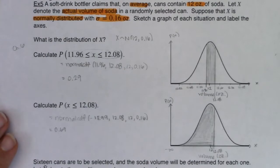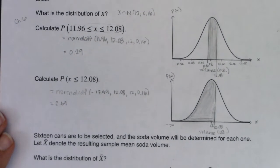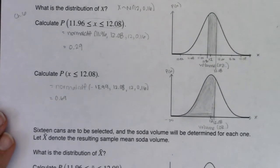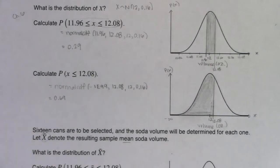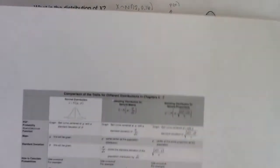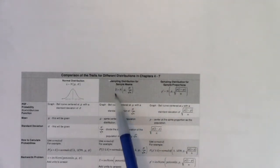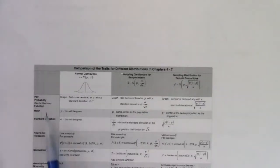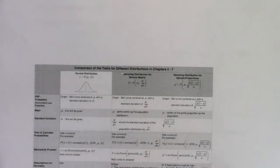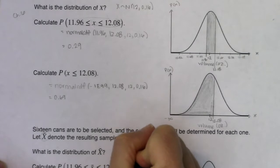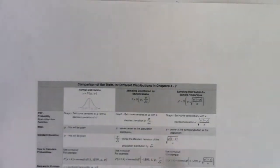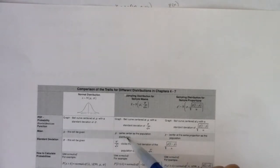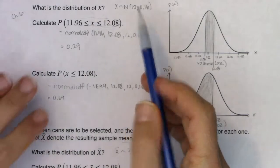Now let's bump up to chapter seven. It says 16 cans are to be selected and the soda volume will be determined for each one. Let x-bar denote the sample mean. So now I'm on an x-bar. There's only one distribution in here that has the x-bar symbol, so you are definitely in the sampling distribution column. Let's see if we can figure out the rules. Here x-bar — let's go with my three question marks — and let's see if we can figure out what's happening.